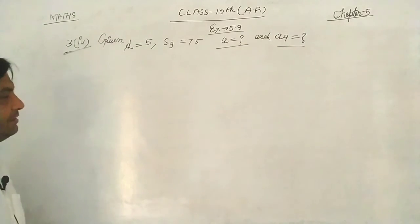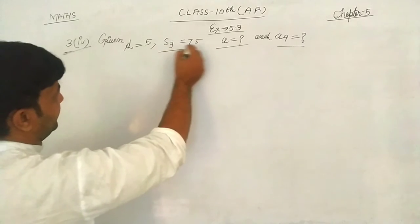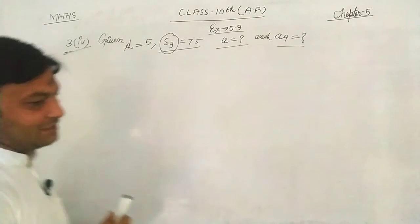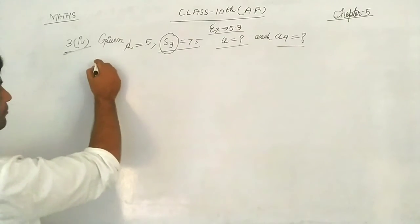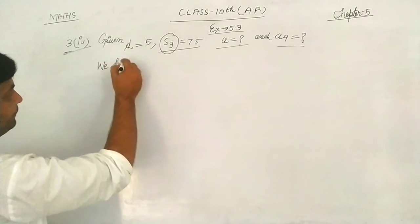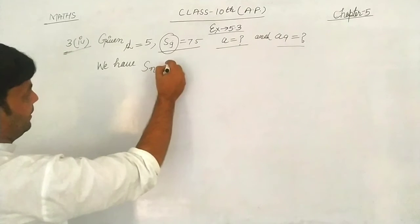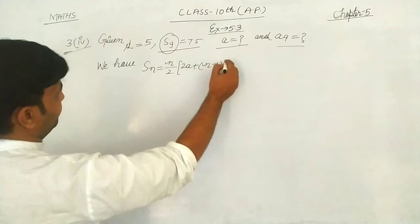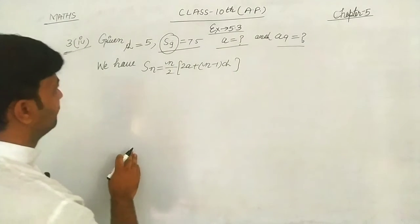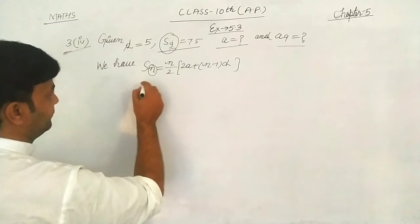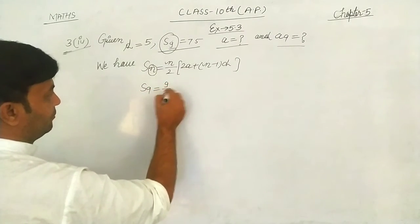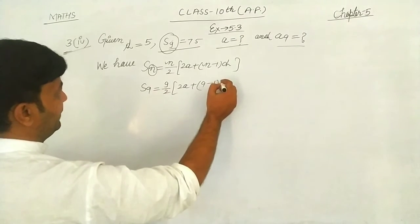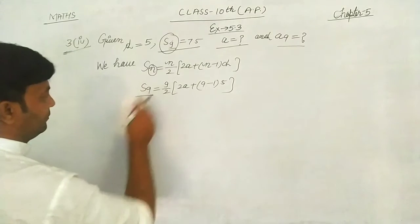Since we have S9, we use the sum of first 9 terms formula. We know: Sn equals n over 2 times (2a plus (n minus 1) times d). Now we put in the values. The value of n is 9, so we write 9 over 2 times (2a plus ...).